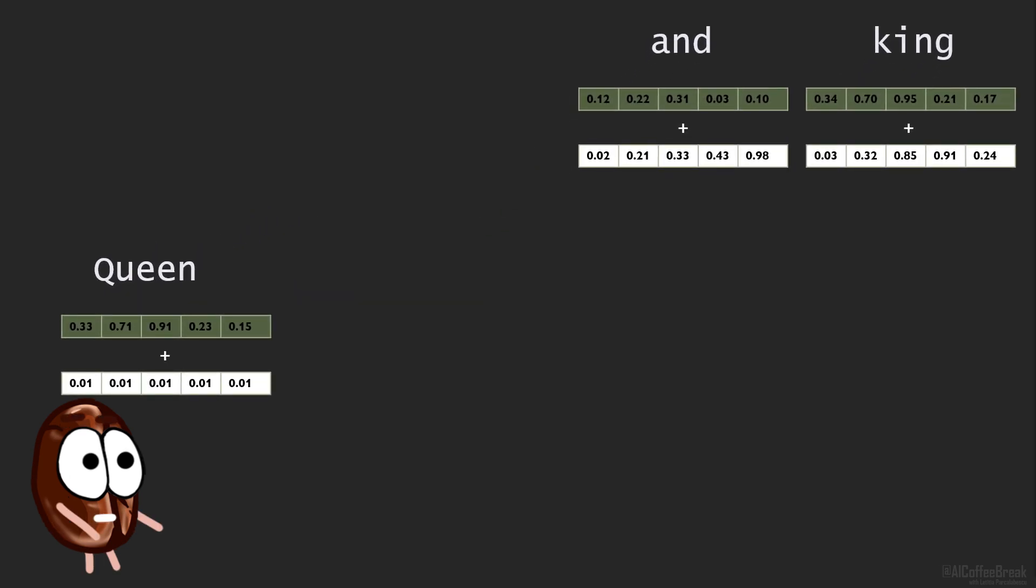Look, the initial vector representation of the word queen is here in the multi-dimensional space. It is close to king because of word frequency distribution reasons—king and queen often occur in the same context. But then we add this positional embedding, identifying the order of the word. Hereby we say, queen should move a bit along this dimension towards this specific part of the space to cluster with all the other first tokens in any other sequence.